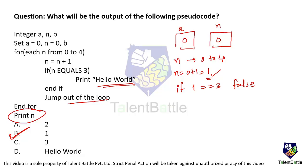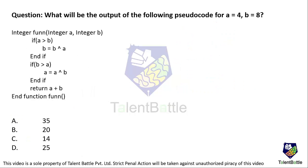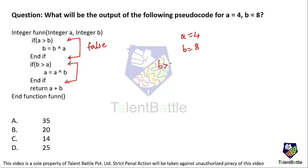What will be the output of the following pseudocode, given a equals 4 and b equals 8? We utilize those values and check which condition will execute, since multiple if conditions are given. Initially a is 4 and b is 8. Inside the function: is a greater than b? No — this block is false. Is b greater than a? Yes, 8 is greater than 4 — this is true. So we execute the statement: a equals a XOR b.